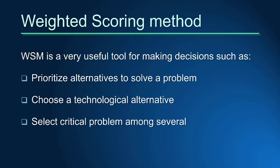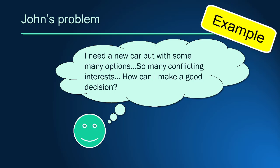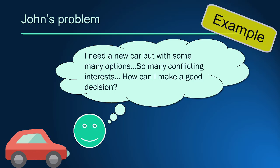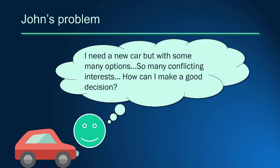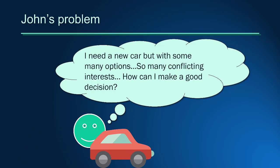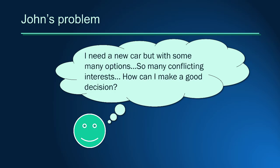First, let's see how the method works in a simple example. John needs to buy a new car, but he is very confused with so many options. He is thinking about a cheaper and fuel-efficient model, but his family is asking for a big and fancy car. His decision involves conflicting interests that are difficult to accommodate. The question is how to find the most suitable alternative that better accommodates all family needs and desires.